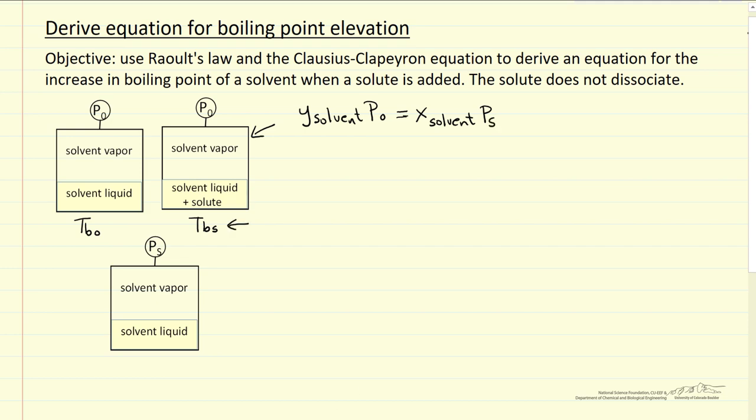So this is important that this pressure is at the elevated boiling point when we add the solute. So we can simplify this equation because the mole fraction of the solvent is 1, since only the solvent is in the vapor phase, so that means the left side is P0.